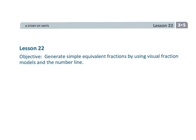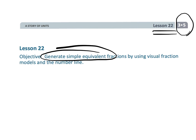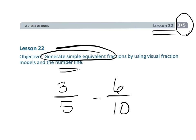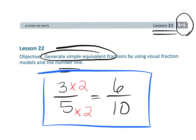And that wraps up grade three, module five, lesson 22, where students are generating simple equivalent fractions using the number line as our main guide. We're informally starting to see that you can have two equivalent fractions, and if they're equivalent, it means you're going to see some sort of multiplicative relationship between those two equivalent fractions.